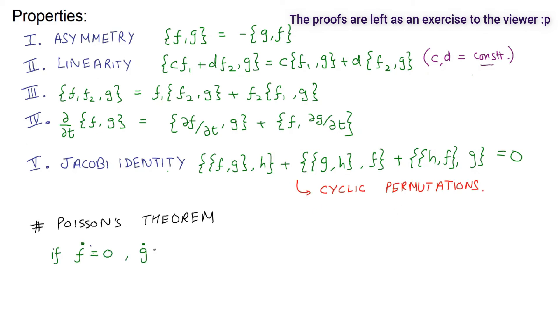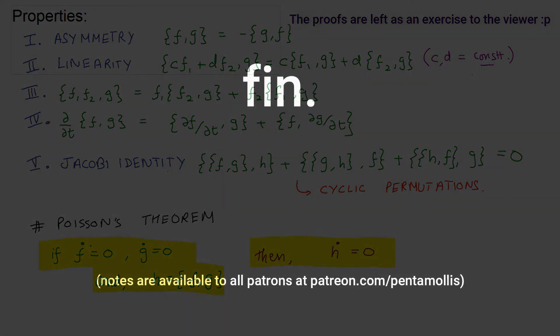Finally, we have the Poisson theorem which states that a Poisson bracket of two conserved quantities evaluates to another conserved quantity. So that was it about Poisson brackets. Thank you for watching.